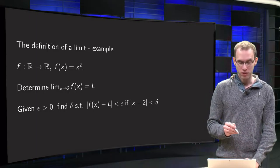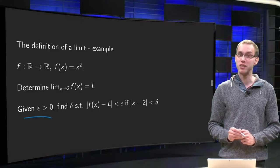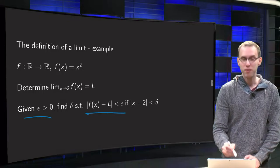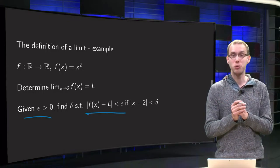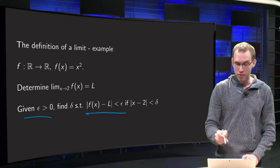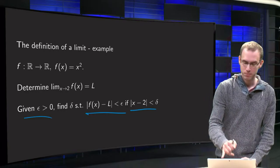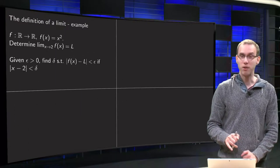So that means we want, given any epsilon greater than 0, to find a delta such that f is closer to L than epsilon whenever x is close enough to 2. OK, there we go.